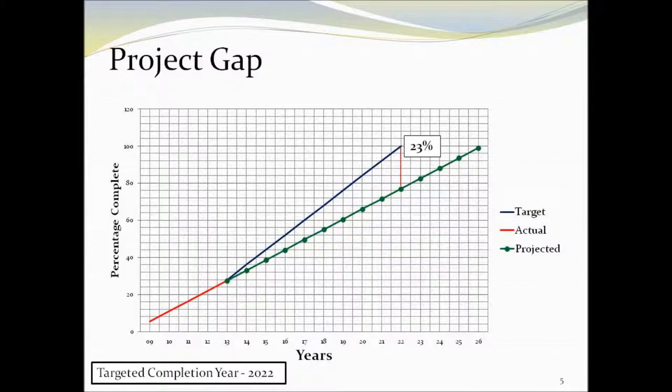Currently, NOAA has been accomplishing about 5.6% of the area covered annually. If the current trend continues, they will finish by the year 2026. NOAA will need to increase output to 8% in order to reach their completion goal by year 2022.